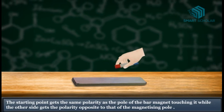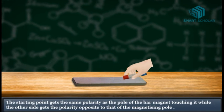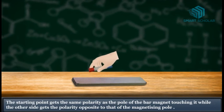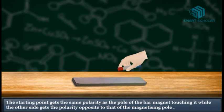The starting point gets the same polarity as the pole of the bar magnet touching it, while the other side gets the polarity opposite to that of the magnetizing pole.